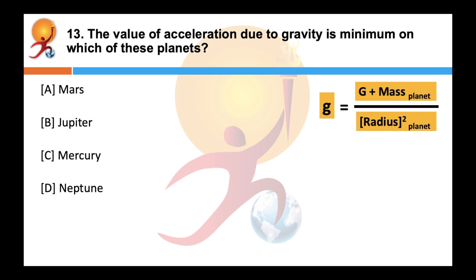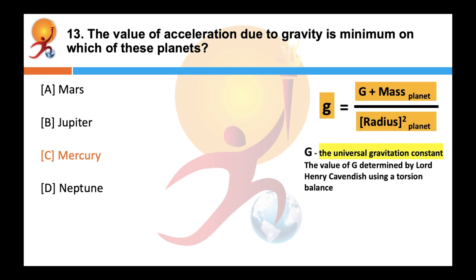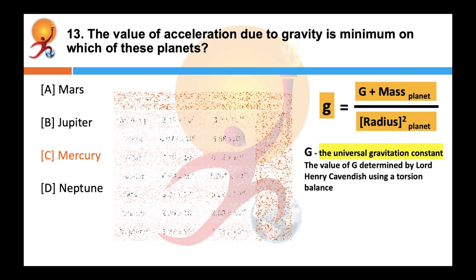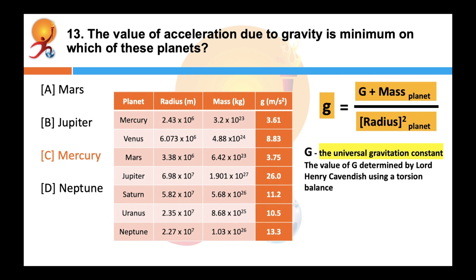The value of acceleration due to gravity is minimum on which planet? Correct answer is C. The value of g on any planet can be calculated from its mass and radius. The value of G was experimentally determined by Lord Henry Cavendish using a torsion balance, an instrument for measuring very weak forces by their effect on a system of fine twisted wires. Based on this, acceleration due to gravity is minimum on Mercury and maximum on Jupiter.